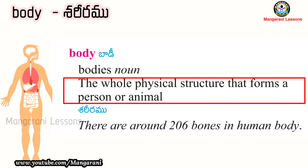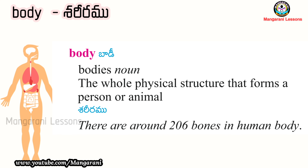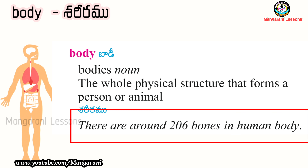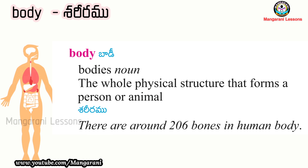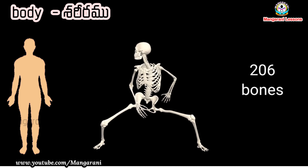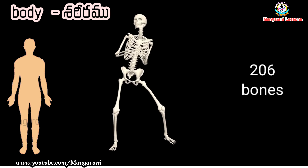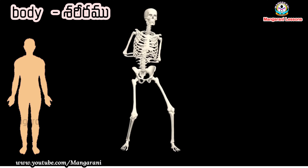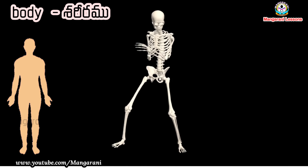The whole physical structure that forms a person or animal. There are around 206 bones in the human body. Mano sariyiramu lho 206 yemukkalu unnay. And yardham bailaluhu - ee rojamanam body.